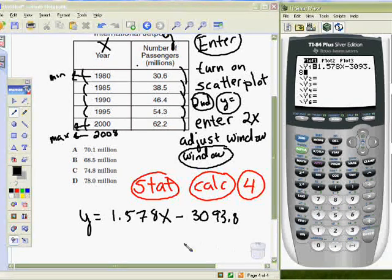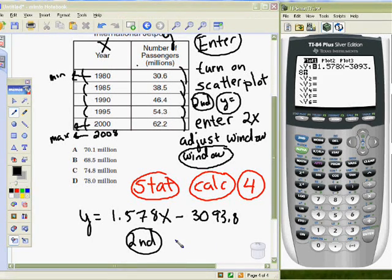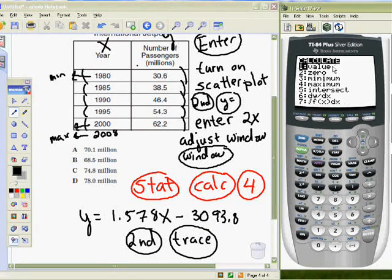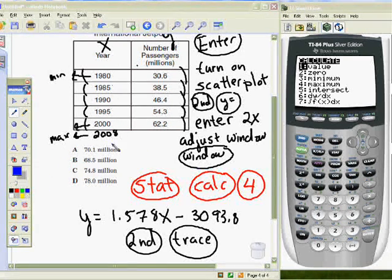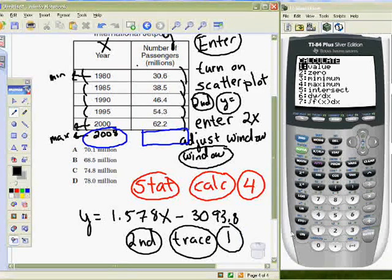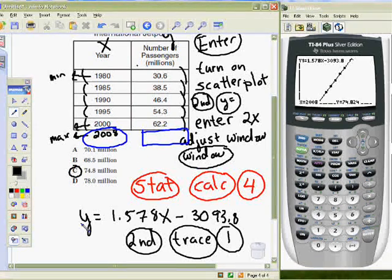Now, once I have this, I want to go to 2nd, trace, and that's going to bring up all of these different choices. I want to choose value, because see, what I want to know, what I'm looking for here, is what is Y going to be when X is 2008. So, hit 1 for value, and it's going to graph it, show you that nice little line that your equation brought right through those ordered pairs that you recorded in there, which shows you it's a great fit to those ordered pairs, the function that we chose. And it says X equals, okay, well, X equals 2, 0, 0, 8. Hit enter. Oh, and Y is 74.824C.